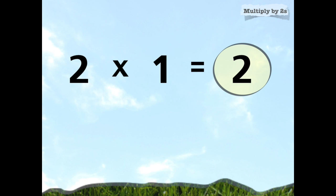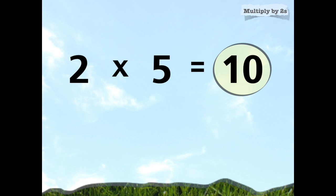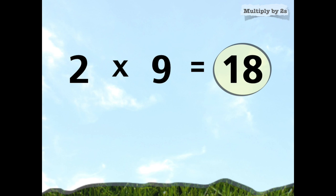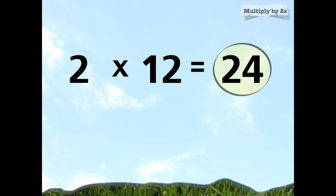Let's multiply by twos. 2 times 1 is 2, 2 times 2 is 4, 2 times 3 is 6, 2 times 4 is 8, 2 times 5 is 10, 2 times 6 is 12, 2 times 7 is 14, 2 times 8 is 16, 2 times 9 is 18, 2 times 10 is 20, 2 times 11 is 22, 2 times 12 is 24.